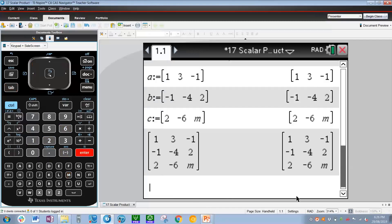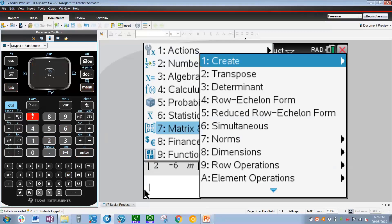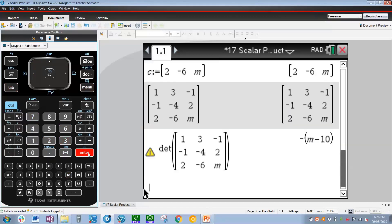So to get determinant, we're going to press menu 7 for matrix and vector, and 3 for determinant. So DET stands for determinant. Press up, which will highlight the matrix. Press enter and enter. So we get the determinant being -(m-10).